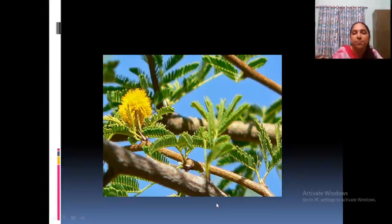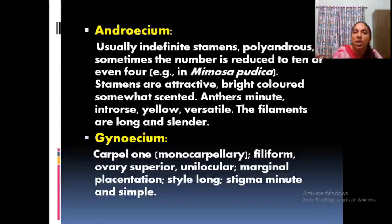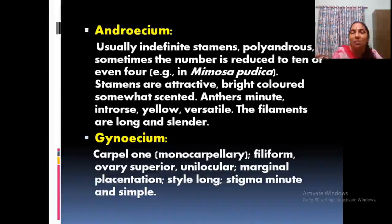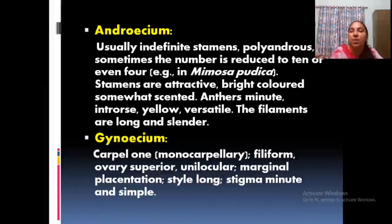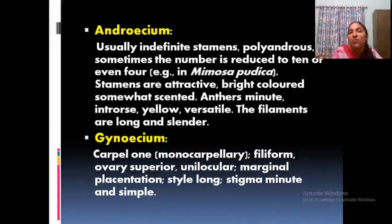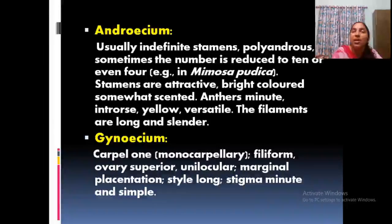Androecium: numerous stamens — indefinite stamens — that is a typical feature of the family Mimosaceae. Fabaceae and Cesalpinaceae are characterized by petal corolla shapes with ascending or descending imbricate aestivation, but here the peculiar feature is the stamen — indefinite, polyandrous condition. Sometimes number may be reduced to 10 or even 4 as in Mimosa. Stamens are attractive — brightly colored, usually scented — and the pink, rose, or yellow colors you see are actually the stamens. The individual flowers are clustered in cymose heads.